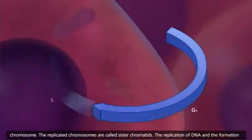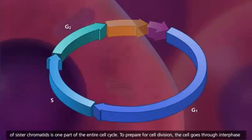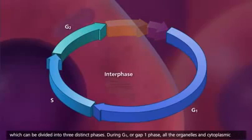The replication of DNA and the formation of sister chromatids is one part of the entire cell cycle. To prepare for cell division, the cell goes through interphase, which can be divided into three distinct phases.